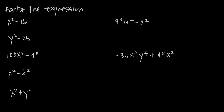For example, if we look at this first expression, x squared minus 16, we have two perfect squares: x squared is a perfect square and 16 is a perfect square, and we're taking the difference between them. In other words, we're subtracting one from the other.